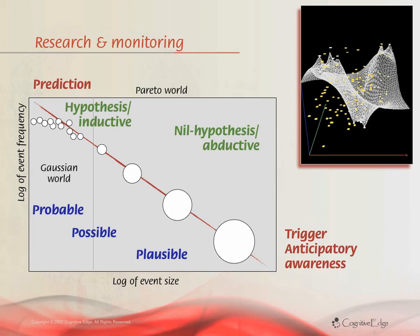I'd call that the switch from fail-safe design to safe-to-fail interventions — multiple safe-to-fail interventions — using distributed cognition, whole-scale human sensor networks, and real-time modeling in which the system feeds back in real-time, as can be done with fitness landscapes.